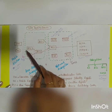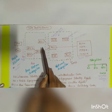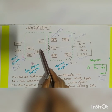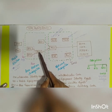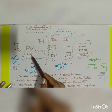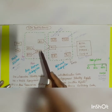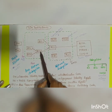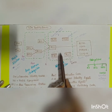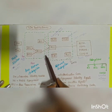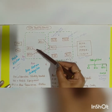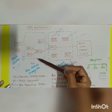The Base Station Controller manages all radio resources for the BTS — it assigns frequency and time slots for all mobile stations in its area and handles call and cell setup. The BSC communicates between the mobile station and the Mobile Switching Center. The interface between the BTS and BSC is called the Abis interface, while the BSC communicates with the MSC via the A interface.